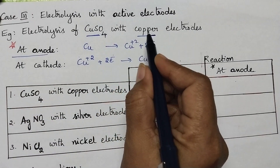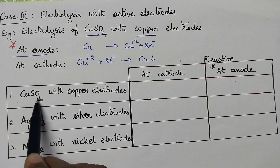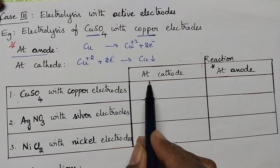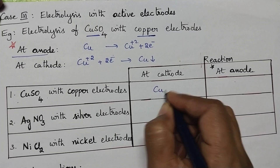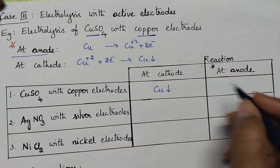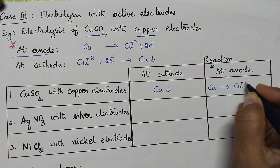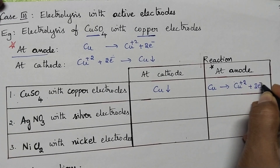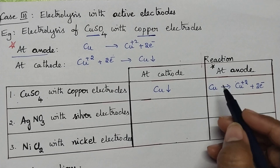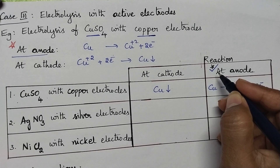So whenever the copper sulfate solution is electrolyzed by using copper electrodes, at the cathode copper metal will be deposited. But at the anode, the copper starts dissolving and gives Cu²⁺ ions. Always you are supposed to identify what reaction is taking place at the anode. Let us see two more examples.